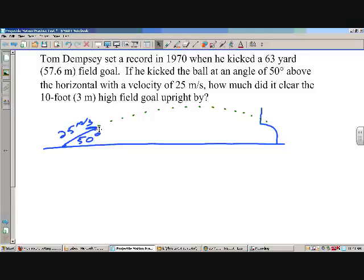We know the height of the upright is 3 meters. We know from the upright to where he kicked it is 57.6 meters. And the basic question is, how much did he clear the upright by, or at this point, what is the displacement in the Y? That's the basic question.